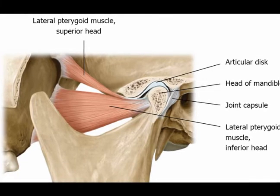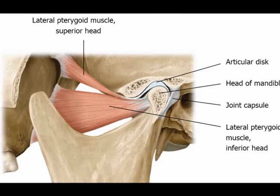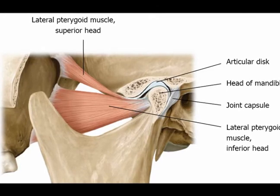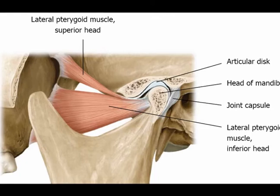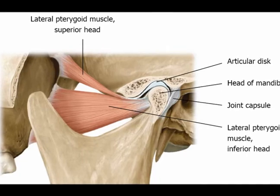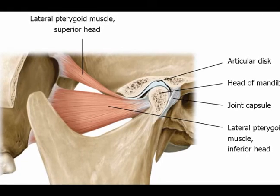The medial pterygoid muscle functions to assist with elevation and protrusion of the mandible. It also assists the lateral pterygoid muscle with side-to-side mandibular motions.